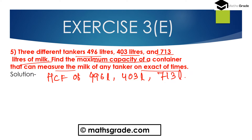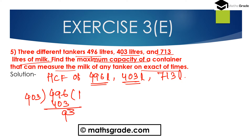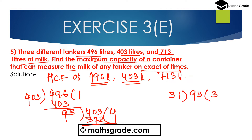First we have to find out the highest common factor between 496 and 403. We divide 496 by 403 using the continued division method. After performing the steps of continued division, we get the highest common factor is 31.